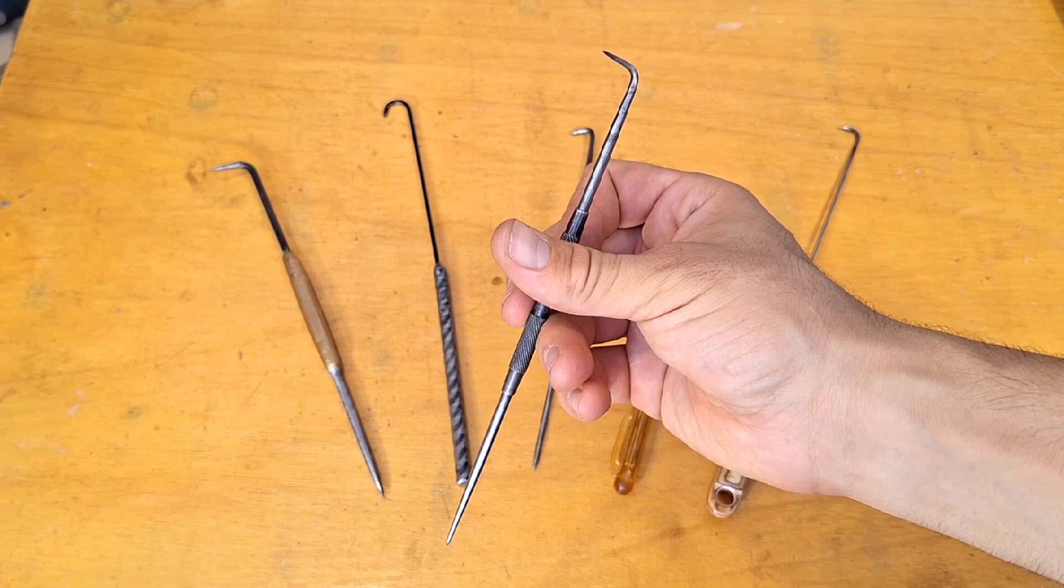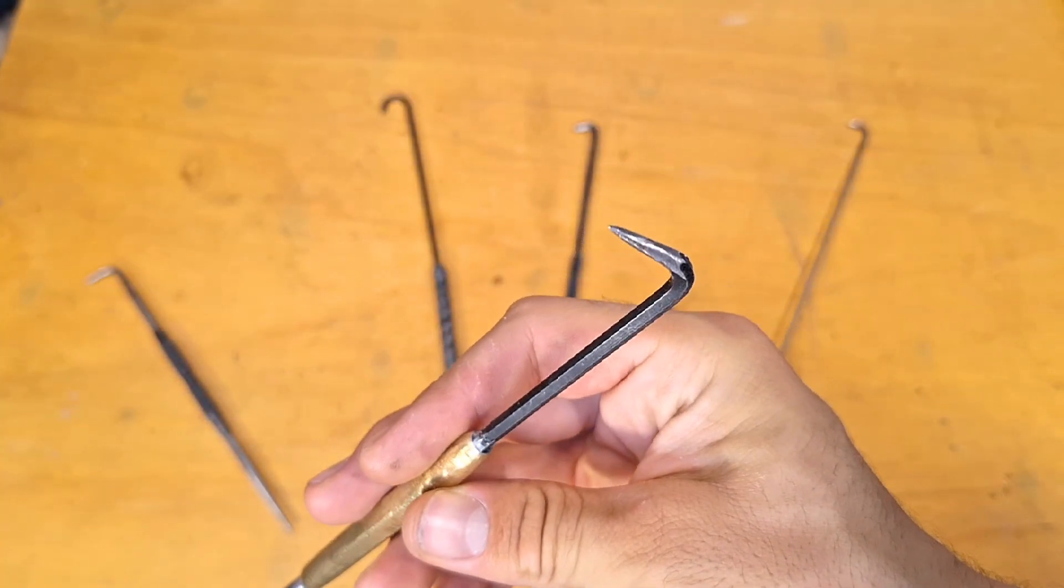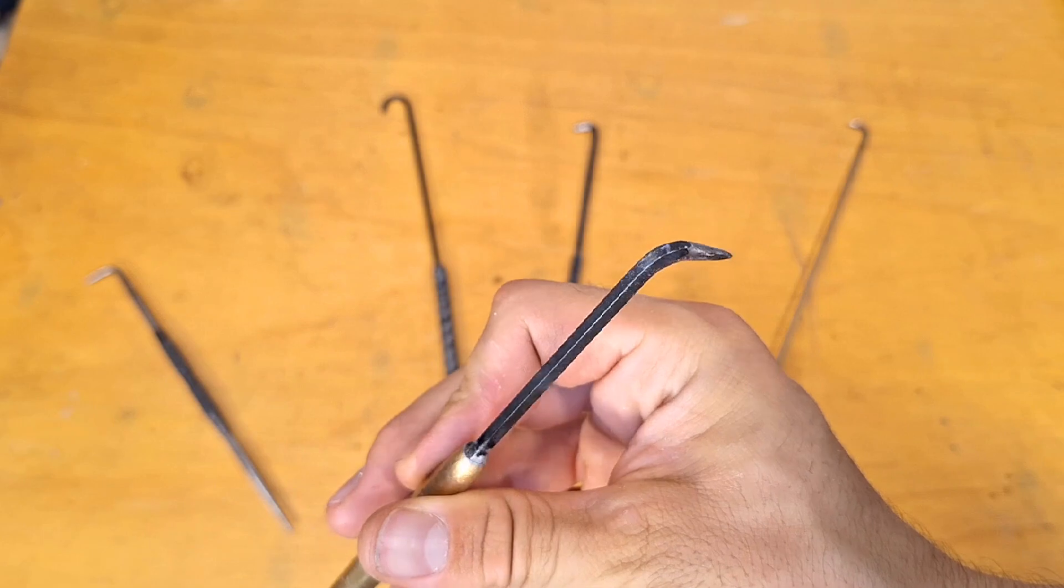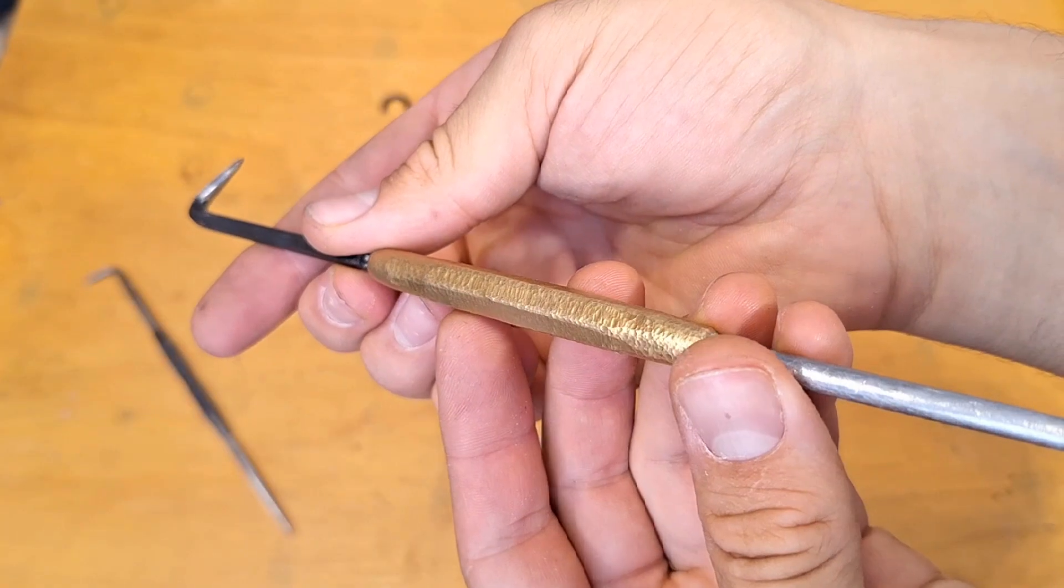You can buy ice picks and I'll link them below, but I prefer to make custom ones. I brazed this one with a nail on one side and an Allen key on the other to avoid bending and heat treating steel. I made this interesting texture using a carbide burr on my flex shaft rotary tool.